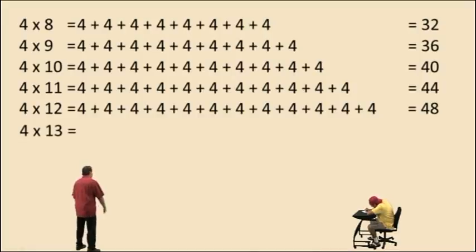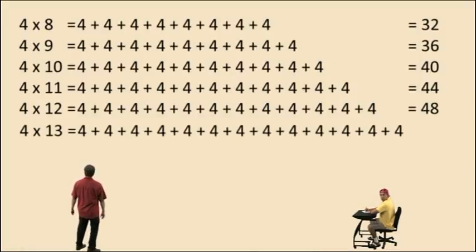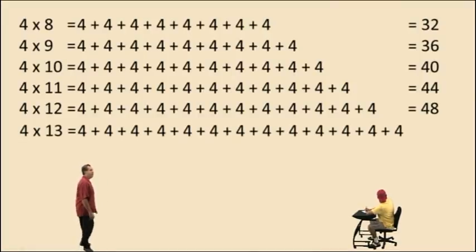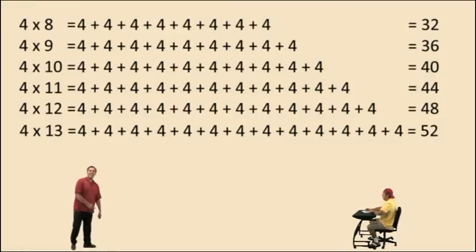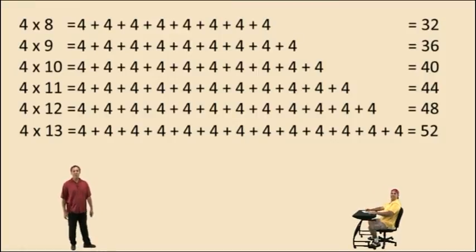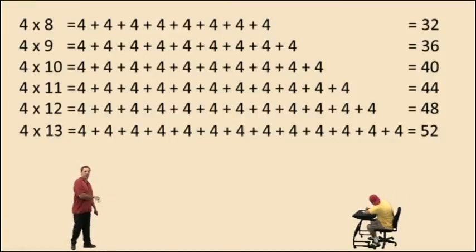Now let's keep going — don't get scared. Four times thirteen, just add another four, and what do you get, Charlie? Fifty-two. Four times thirteen is fifty-two. There you go — that's some good kung-fu right there.